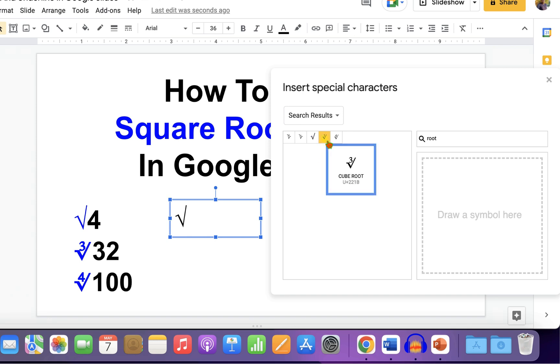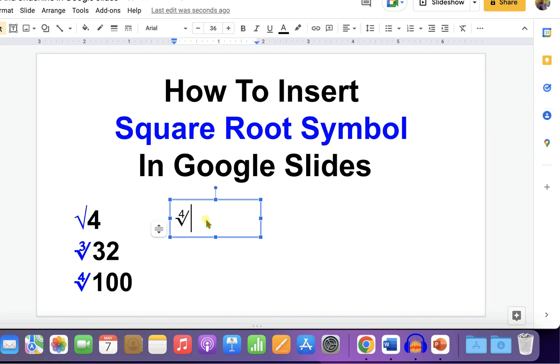And similarly, you can also click on cube root and fourth root. And once done, just close this window. Double click inside the text box and type the number.